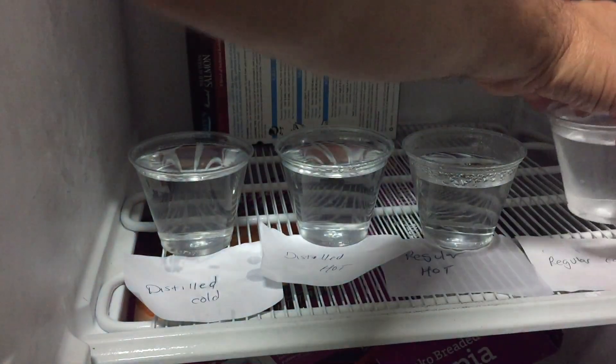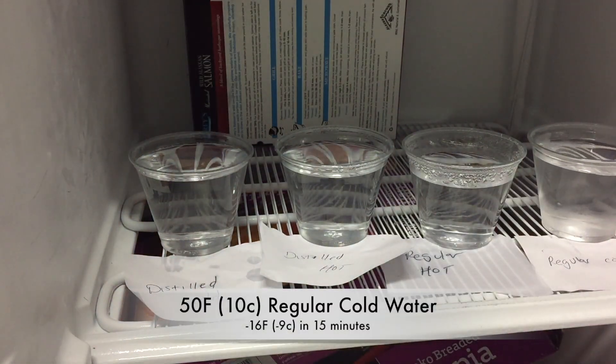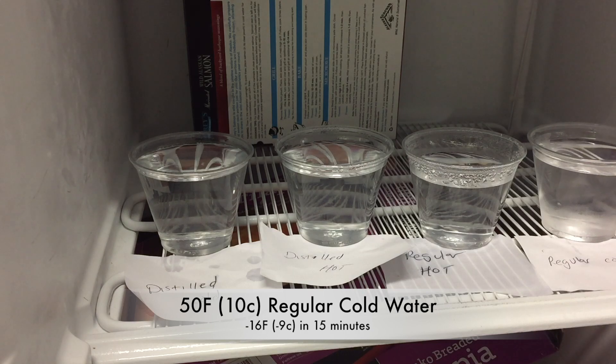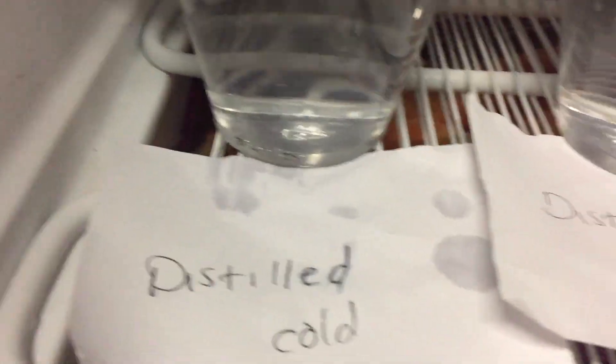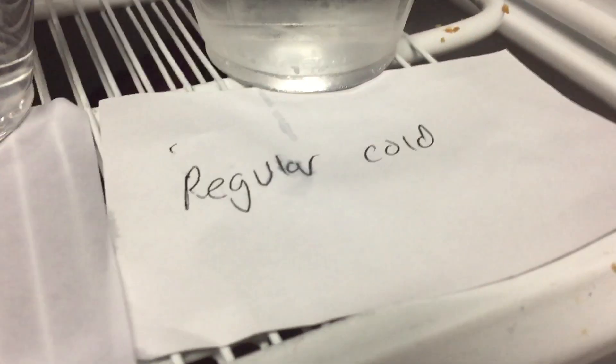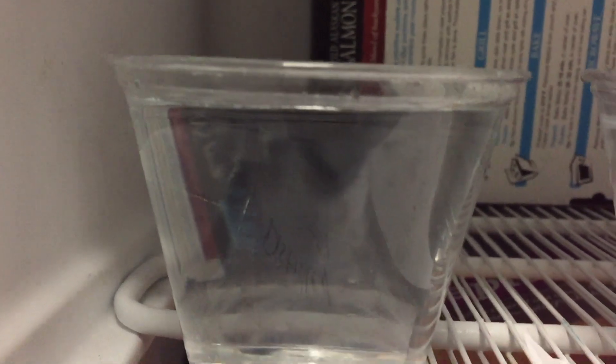Theories for the Mpemba effect include faster evaporation of hot water, therefore reducing the volume left to freeze. Good point. Information frozen layers on cold water. You can see here, we already see the hot water has evaporated a lot more water than the cold waters, which makes sense why it might freeze faster.